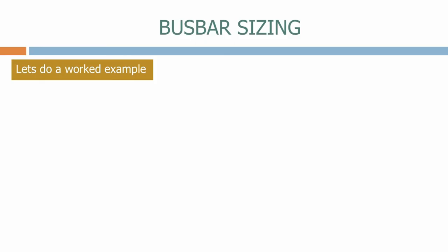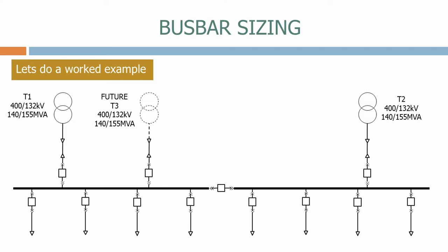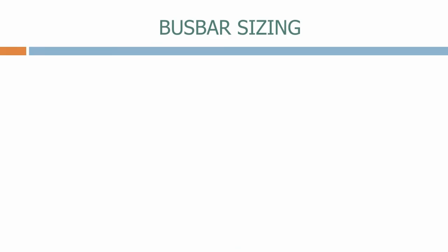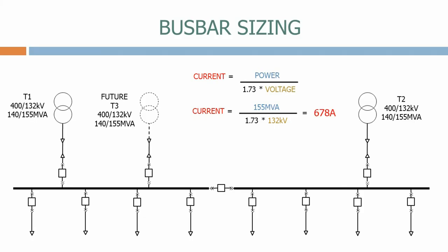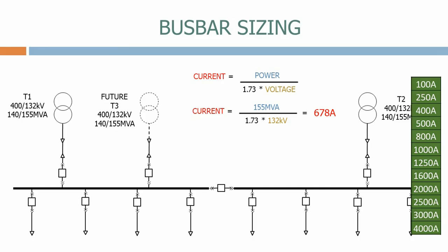Let's do a worked example. For the arrangement shown, calculate the ratings of the busbars and the current ratings of the incomer and busbar section breakers. First, let's work out the peak current produced by each of the transformers. The current equals the power divided by root 3 times the voltage. The current therefore equals 155 MVA divided by root 3 times the secondary voltage of 132 kV. Therefore, each transformer contributes a maximum of 678 amps. Each incomer circuit breaker needs to carry this current. Looking down the standard rating table for circuit breakers, we choose an 800 amp rating.